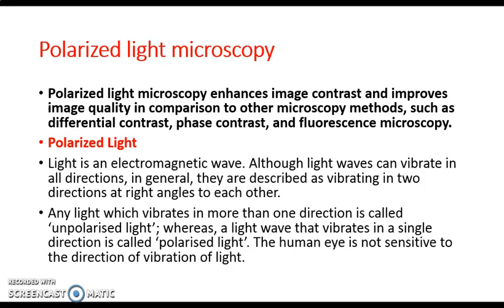What do you mean by polarized light? Light has two characters: it behaves as a wave and also as a particle. According to the behavior of a wave, light is an electromagnetic wave. Light waves can vibrate in all directions, but in general they are described as vibrating in two directions, each at right angles to each other. This is called unpolarized light.